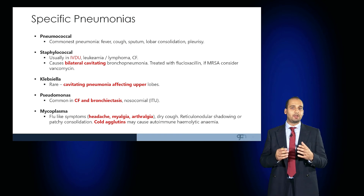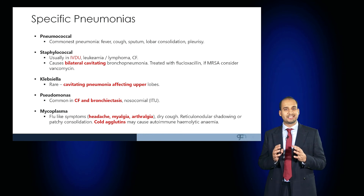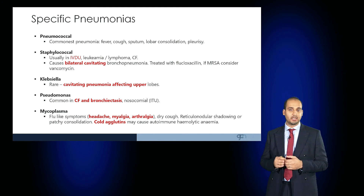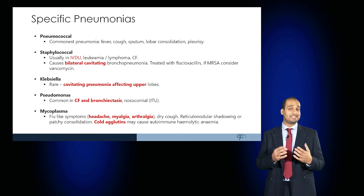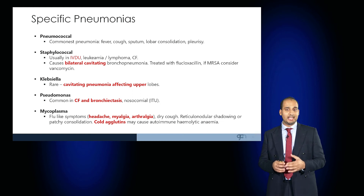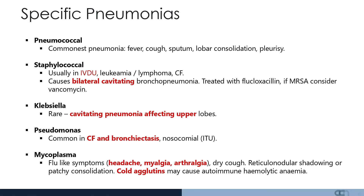Klebsiella is a rarer cause of pneumonia and usually causes a cavitating pneumonia affecting the upper lobes. Pseudomonas, which is common in cystic fibrosis and bronchiectasis, is a relatively common nosocomial or hospital-acquired infection usually seen in patients who are intubated on intensive care.